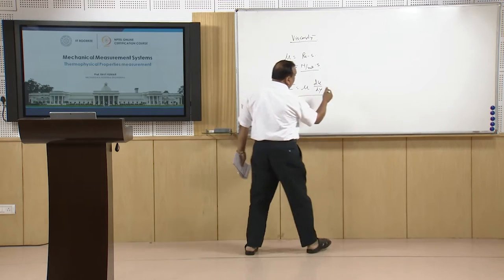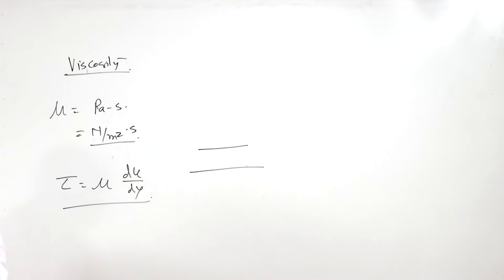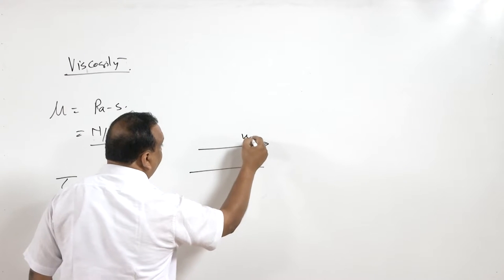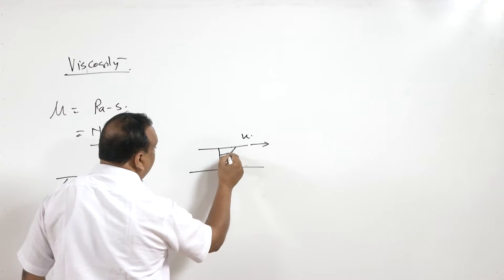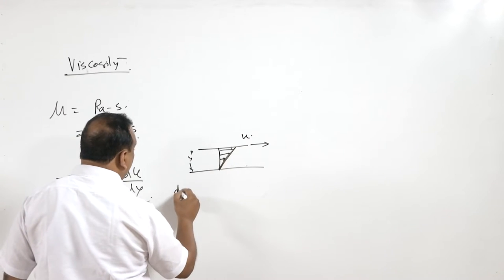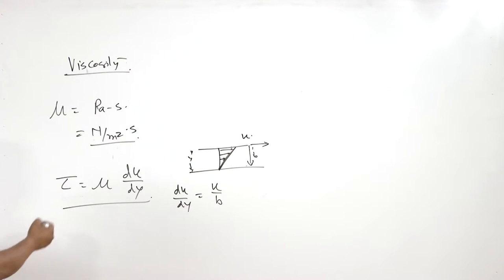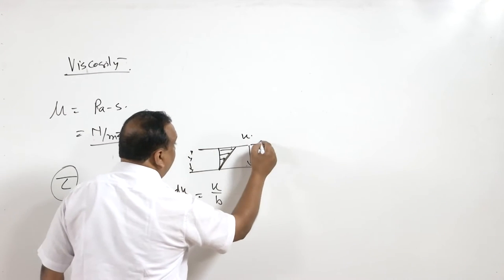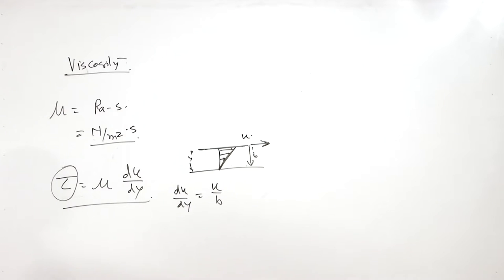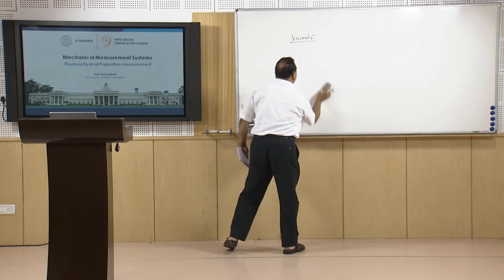For finding viscosity, we use the relation: shearing stress τ = μ·(du/dy). If two plates are separated by a small distance b, with the gap filled with fluid, the bottom plate stationary and the top moving with velocity u, then du/dy = u/b. Shearing stress is the force exerted in the direction of motion divided by the plate area. From this, viscosity μ can be found. There is also a more sophisticated method.